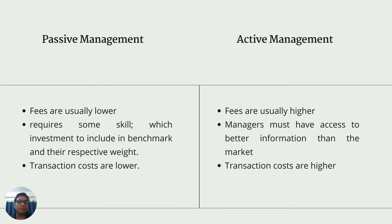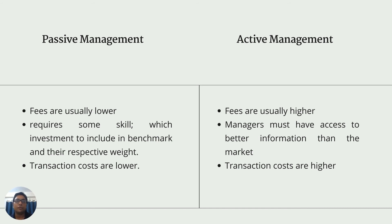Let's summarize the differences between passive management and active management. In case of passive management, since they are trying to match the index, they require some skill — the skill to pick the investments included in the benchmark with their respective weights. In case of active management, managers must have access to better information than the market, because having that information edge will help them generate returns greater than the market. They attempt to select undervalued securities, overweighting those and underweighting securities that are likely to underperform or are overvalued. This added value is what we call alpha. In case of active management, the skill needed is higher, and they aim to perform better than the passive portfolio manager.